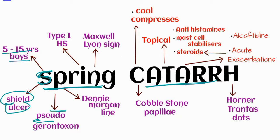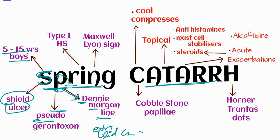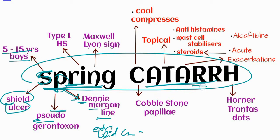The letter that looks like 'D' gives us another sign: Dennie-Morgan line, which means extra lower lid crease. Then 'R' — in the entire word 'Spring Cutter', R is repeated three times, and anything repeated three times is considered useless, so R is skipped in our mnemonic.